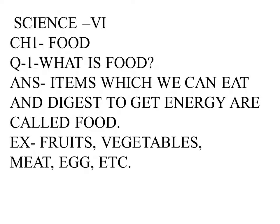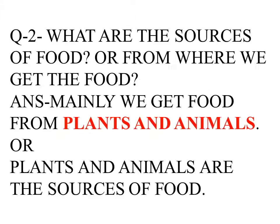Hello guys, we will see some important terms from chapter number one, grade six: Food Comes From Where. First question — what is food? Items which we can eat and digest to get energy are called food. Examples: fruits, vegetables, meat, eggs, etc.